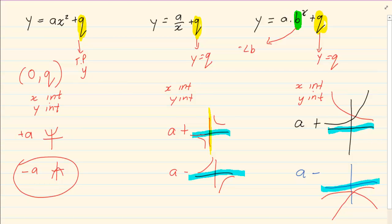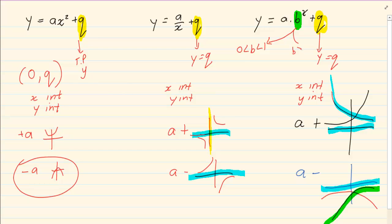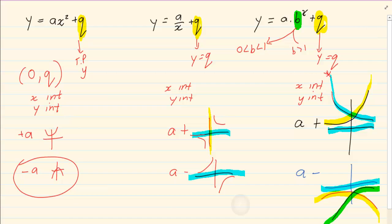That comes from b. If b is greater than 0 but smaller than 1, then the graph is starting from the left-hand side. If b is greater than 1, then we are starting from the right-hand side. So if b lies between 0 and 1, we are starting from the left-hand side.